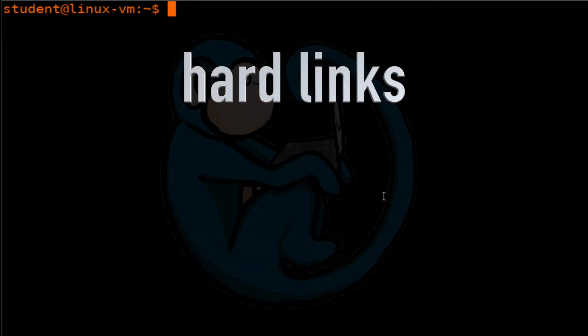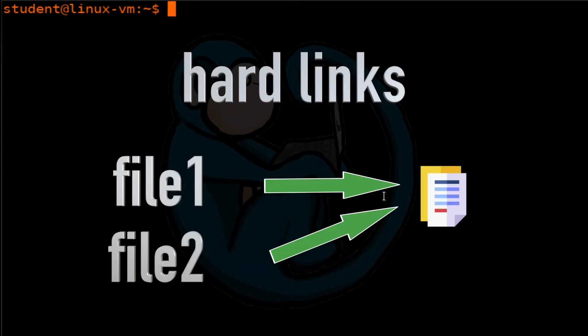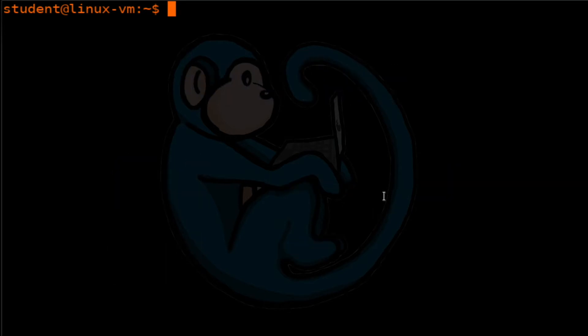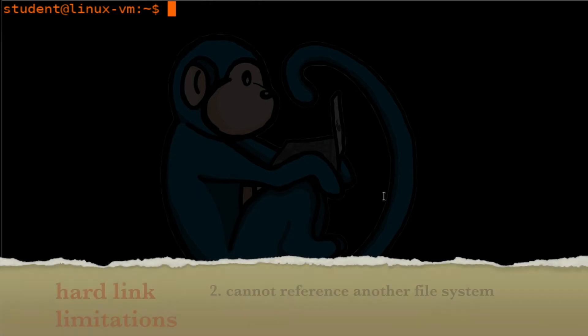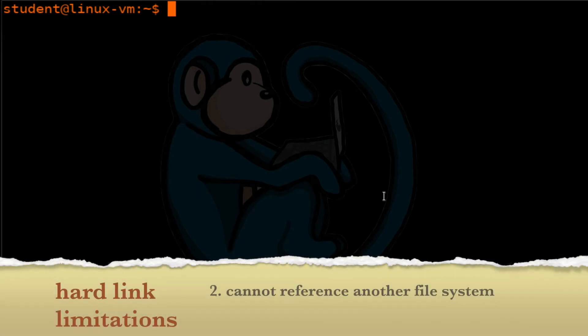The hard link is the older style of creating a link and has two limitations. The hard link can reference a file, but not a directory. And secondly, the hard link cannot reference a file in another file system.